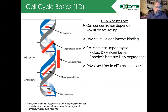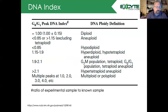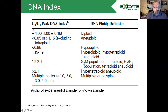Why do we do one-dimensional cell cycle analysis? In one case we're looking at what's called the DNA index. The DNA index is a ratio of some experimental sample to some known control. If the two samples have a ratio of one, then we have a normal diploid cell.